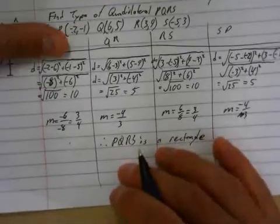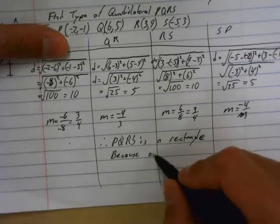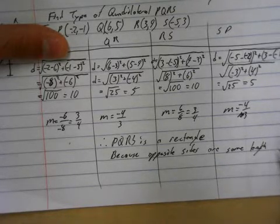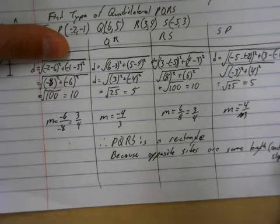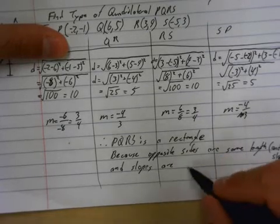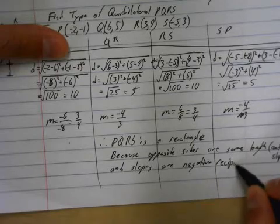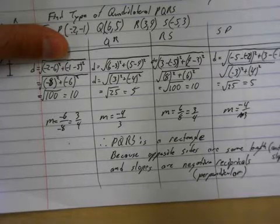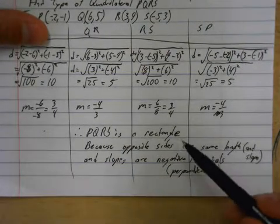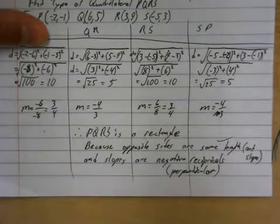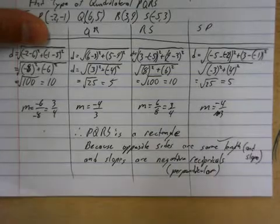Now, why though? Two different things. Because opposite sides are the same length, I guess you could say, and slope. And slopes are negative reciprocals which means perpendicular. So when you discuss whether it's a rectangle or a rhombus or a square or a kite or a parallelogram, discuss the opposite sides and their length. So opposite sides are the same length. They're not all the same length. If they were all the same length, this would have been a square. So opposite sides are the same length and slopes are negative reciprocals.